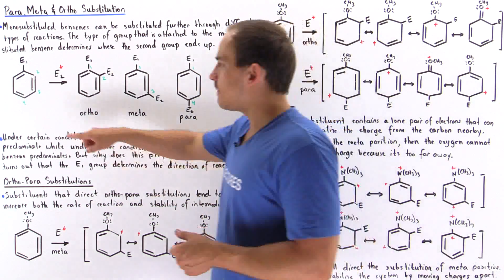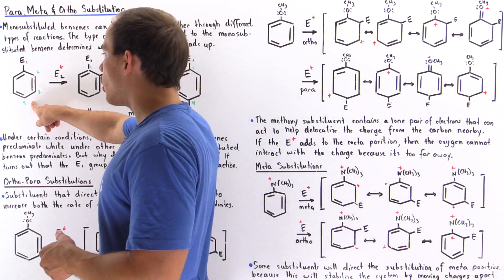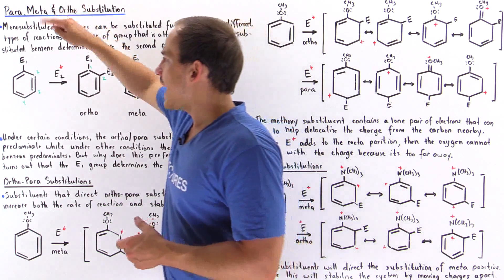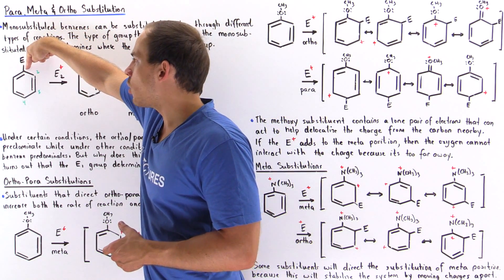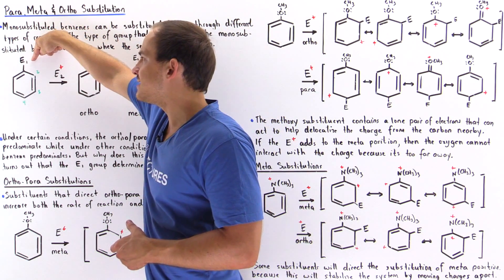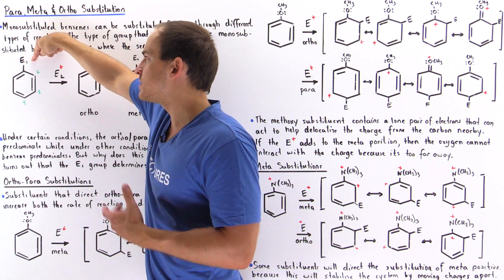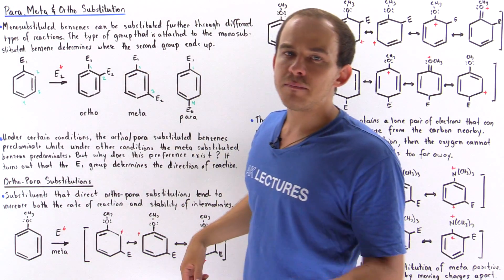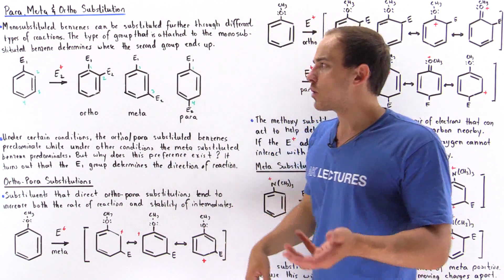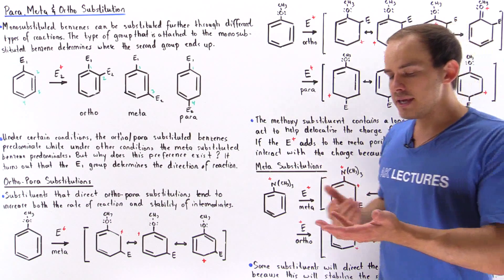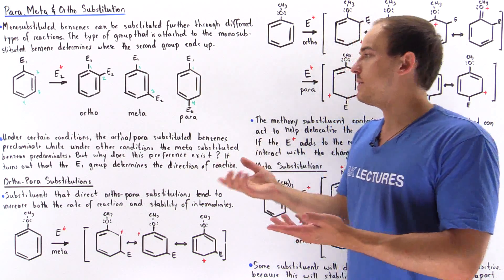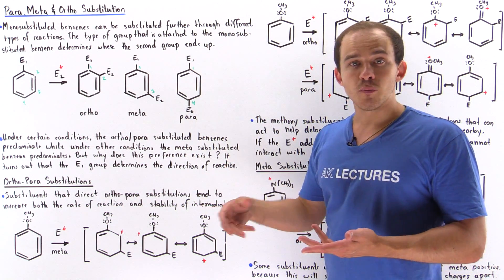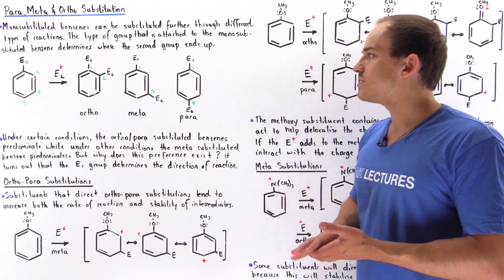Let's suppose we have a monosubstituted benzene in which the H atom on the first carbon has been replaced with an E1 substituent. E1 represents some type of arbitrary substituent — it can be a hydroxy group, a methoxy group, a methyl group, an ethyl group, and so forth.